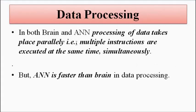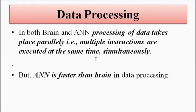The next criterion is data processing — the manner in which instructions are executed and data is processed to give us the output. Here, both the brain and the artificial neural network process data in a parallel manner. There are parallel connections and multiple instructions executed simultaneously at the same time. We can think of many things about various situations at the same time — that is the human brain. Similarly, in the artificial neural network, data is processed simultaneously because of the parallel architecture.